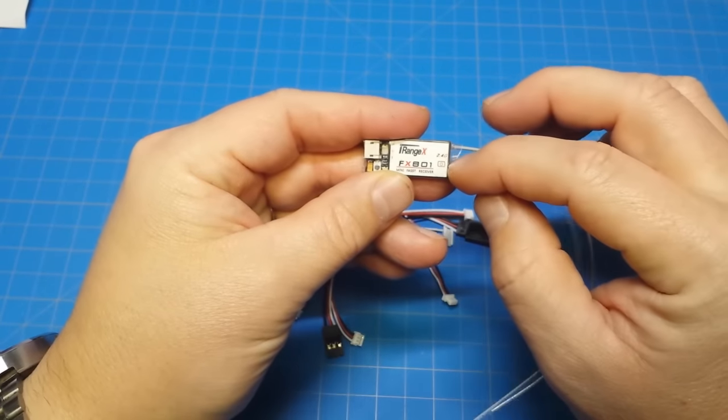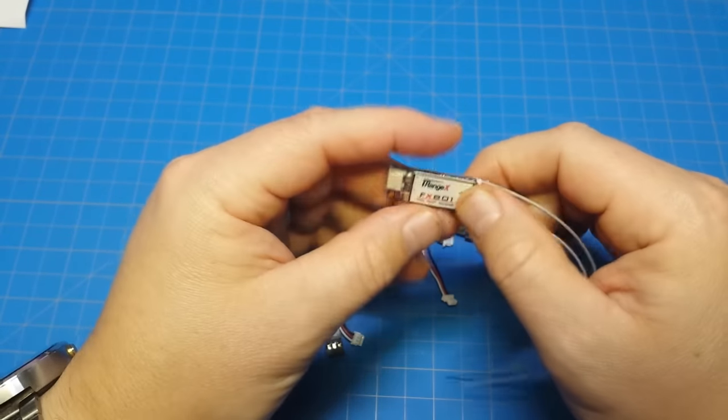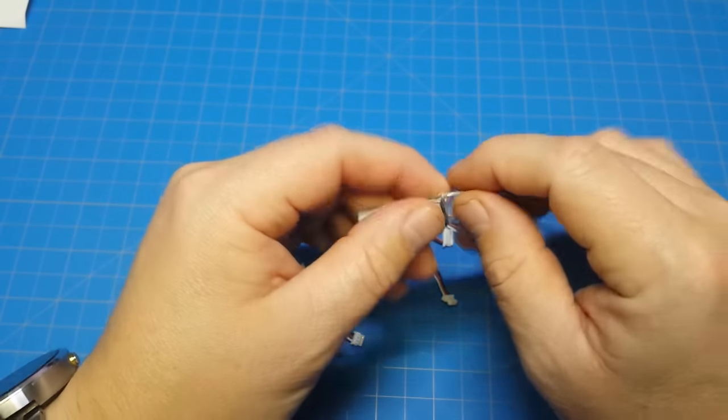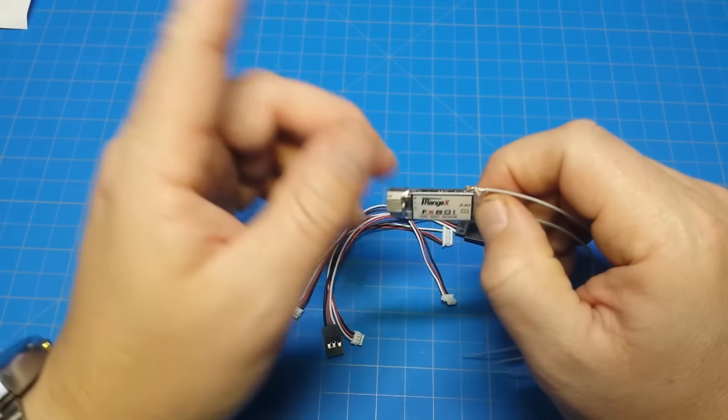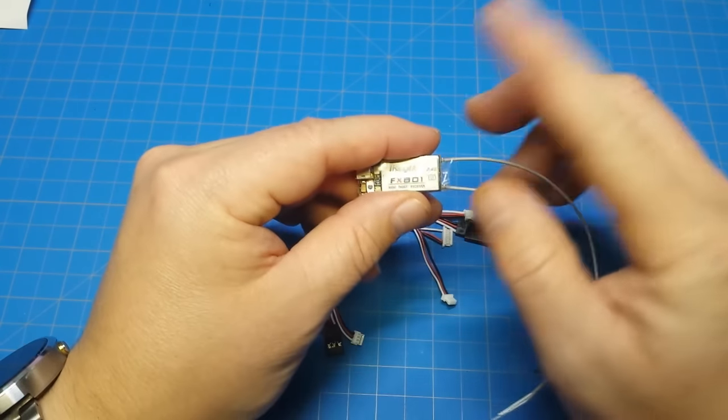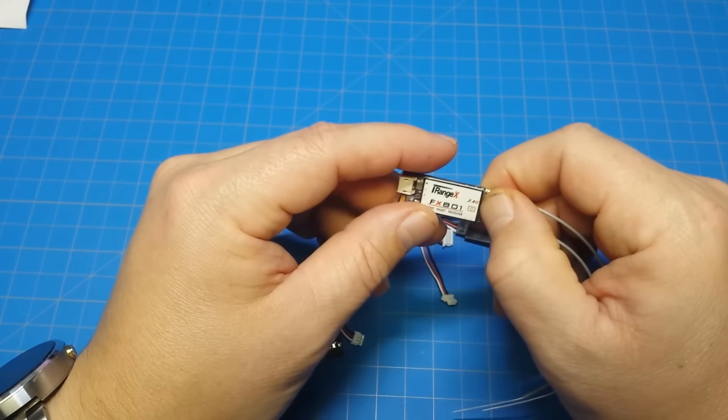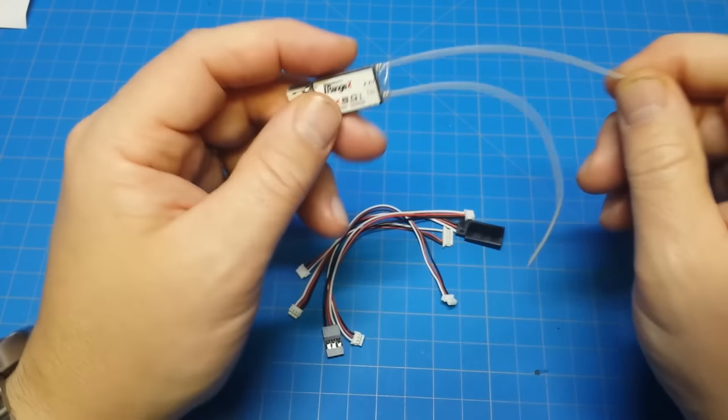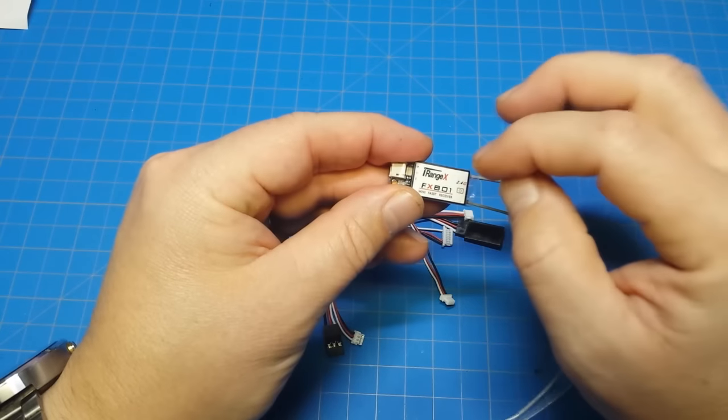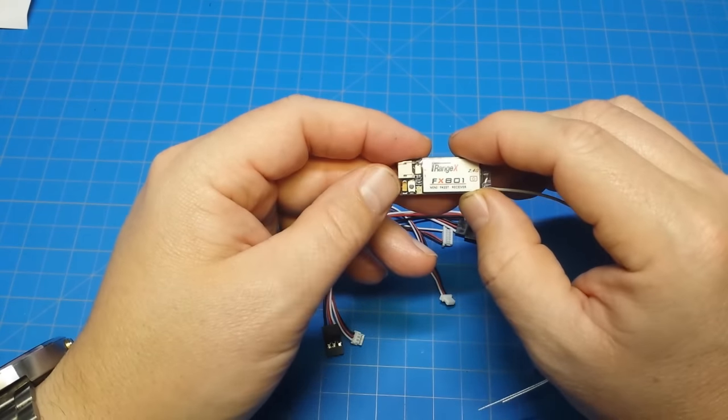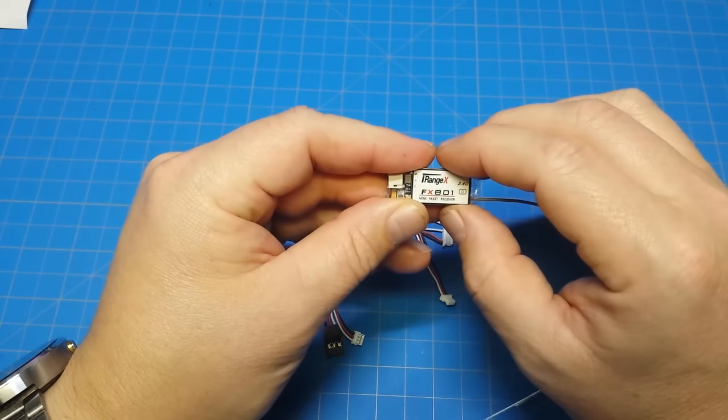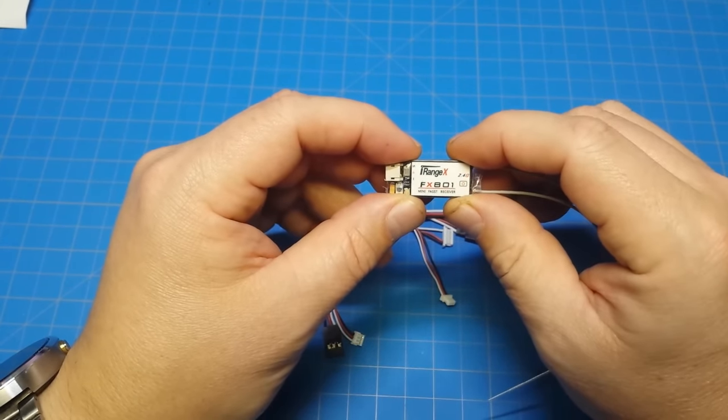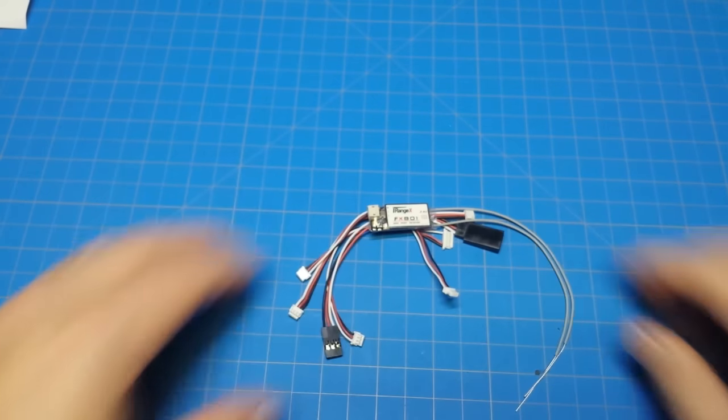Look for a future build that I include one of these iRangeX receivers in. I've got a couple on the way. I'm going to plan on using the FR Sky version, which they have one that I just located between cuts, and it's only $13.99. Single antenna, but $13.99. If you have any questions or comments, please let me know in the section down below. I'll leave the links for the various different versions of the iRangeX receivers down below as well. Okay, thanks for watching.